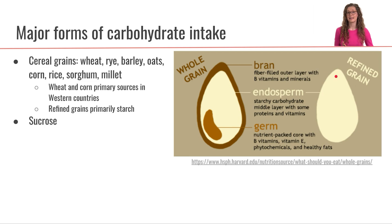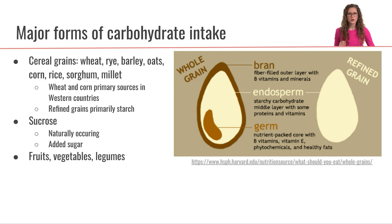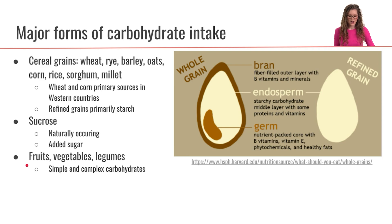Another major form of carbohydrate intake is in the form of sucrose. Sucrose is a disaccharide of glucose plus fructose — it is naturally occurring in many plants, but we also get a lot of sucrose in our diet in the form of added sugar. Other sources of carbohydrates in the diet are from vegetables, legumes, and fruits, and these different plant foods have a diversity of carbohydrates in them, both simple and complex.